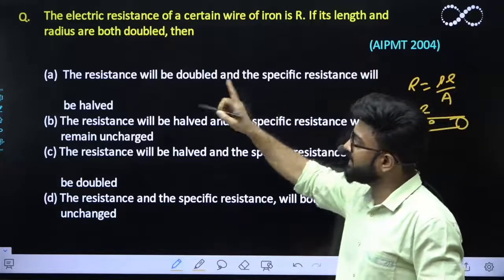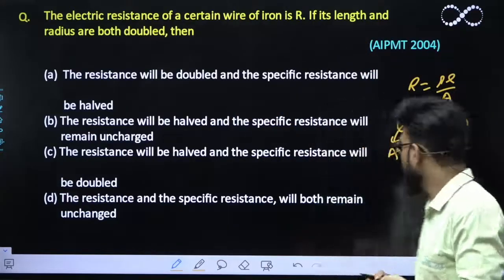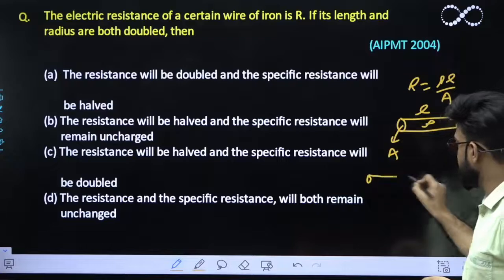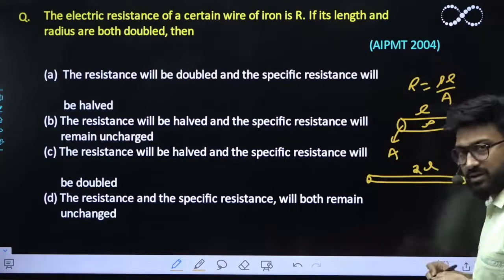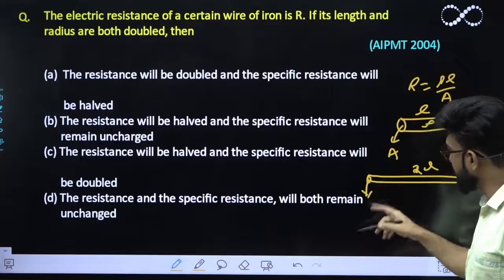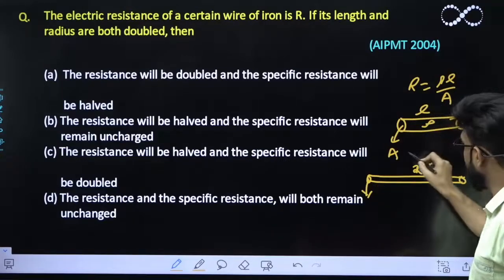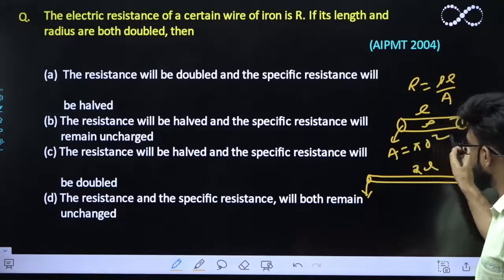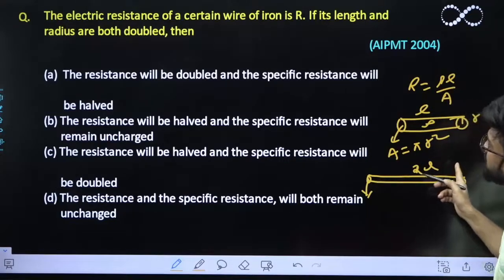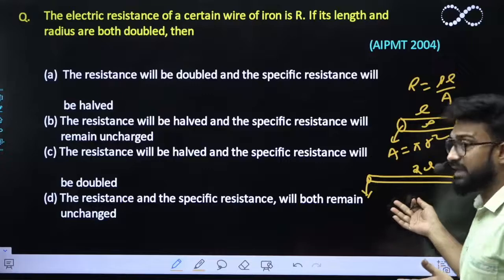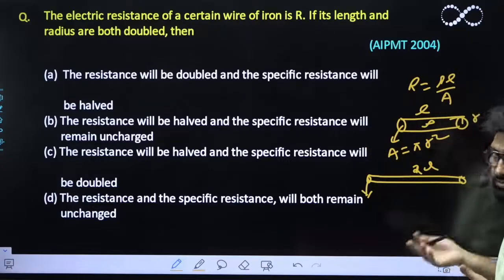It says its length and radius both are doubled. So now if length is doubled, the new length becomes twice of L. And also its radius becomes double. So here if its radius is R, this area was Pi R square. It says its length is doubled and area is also doubled. Now both of them becomes double.